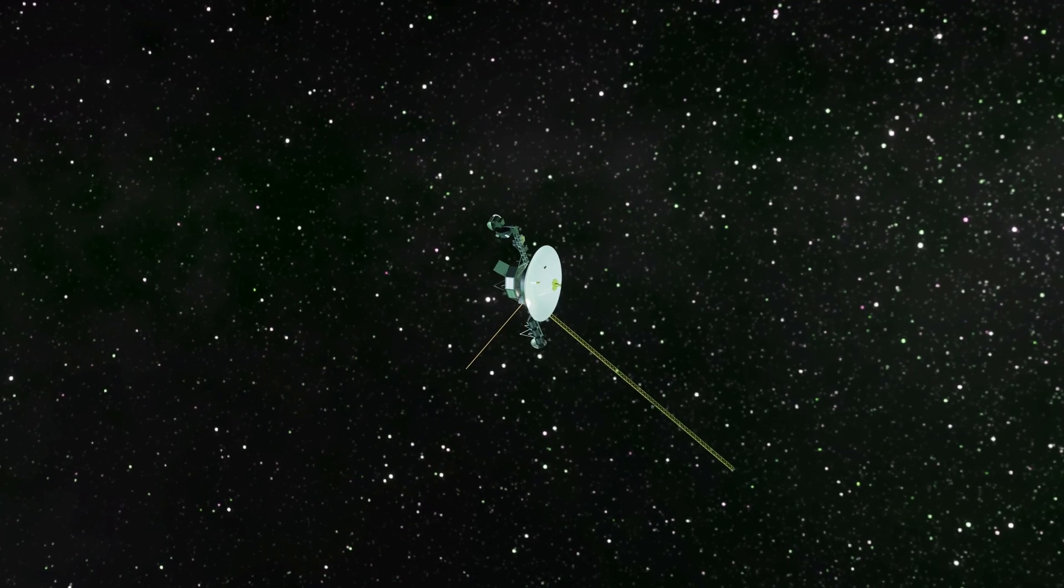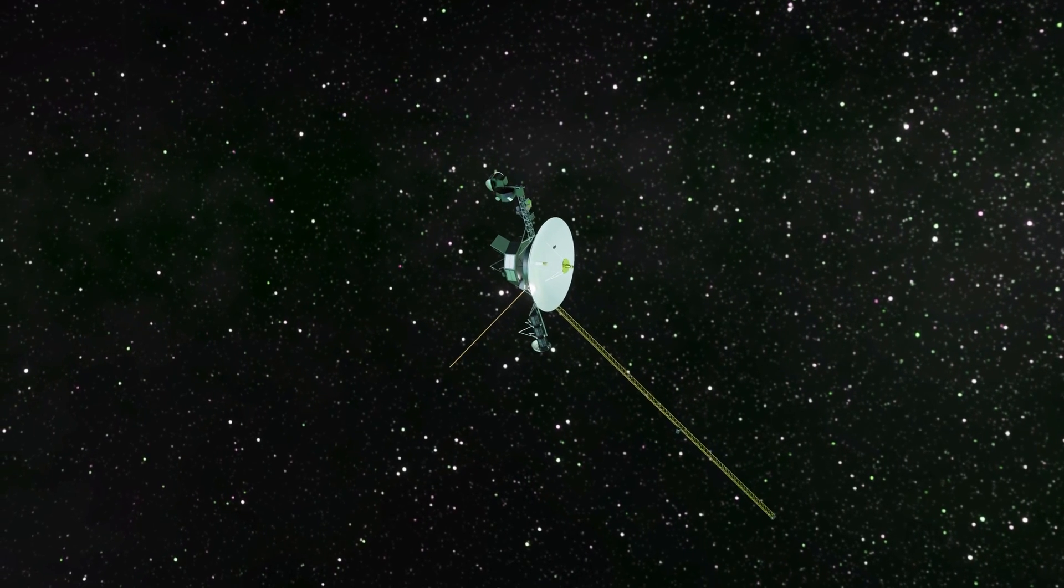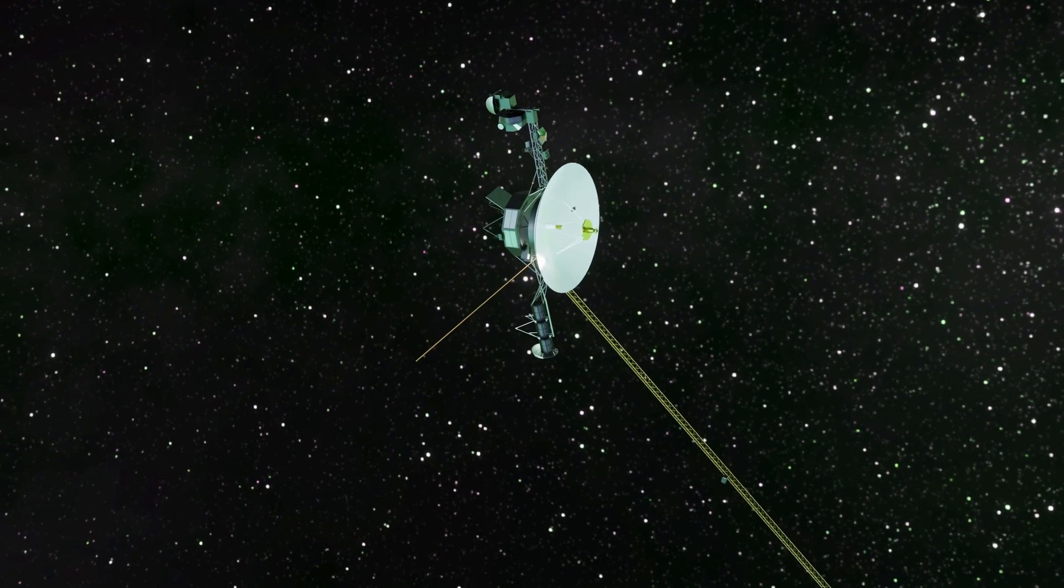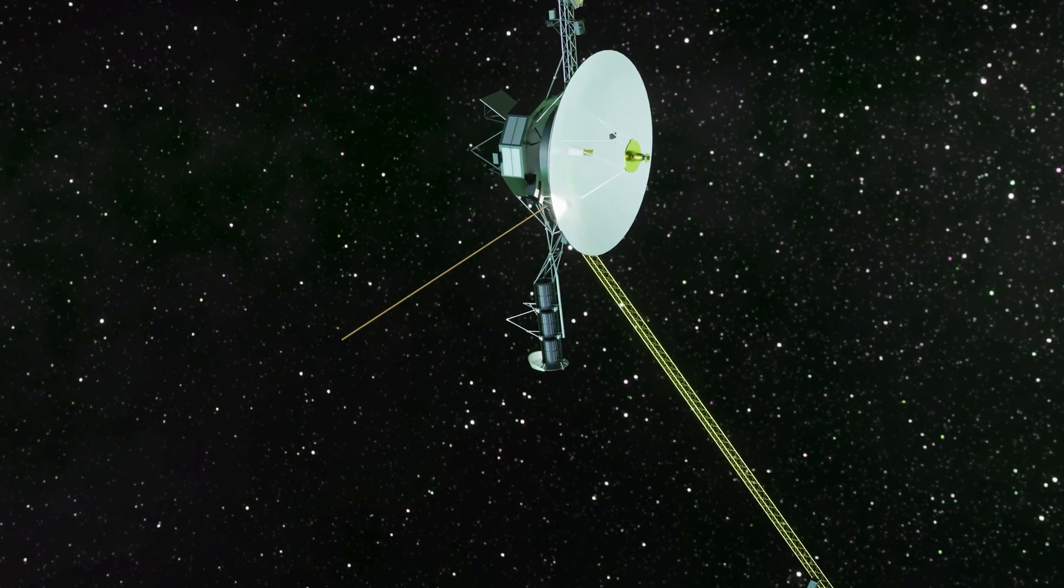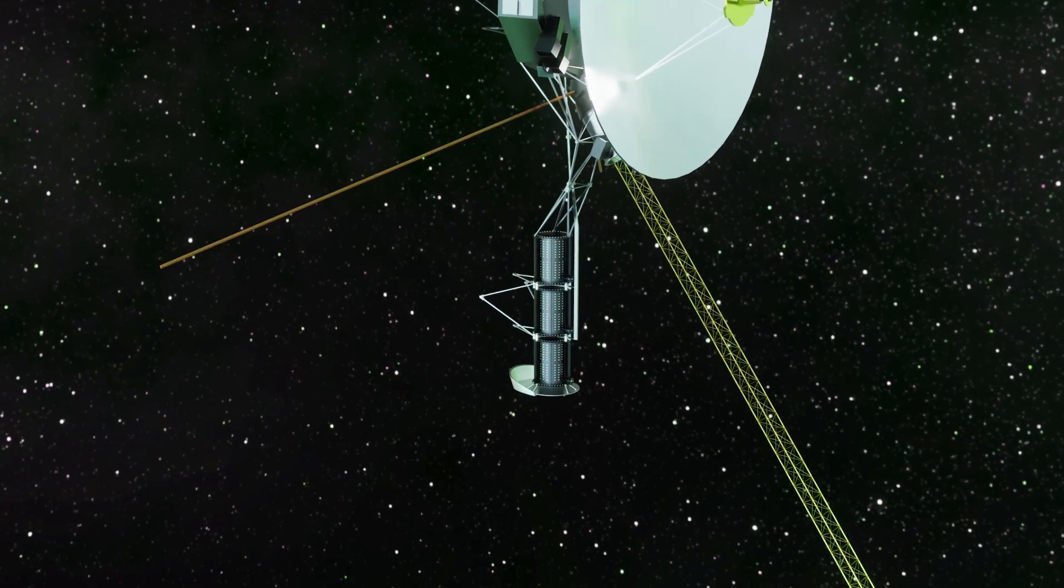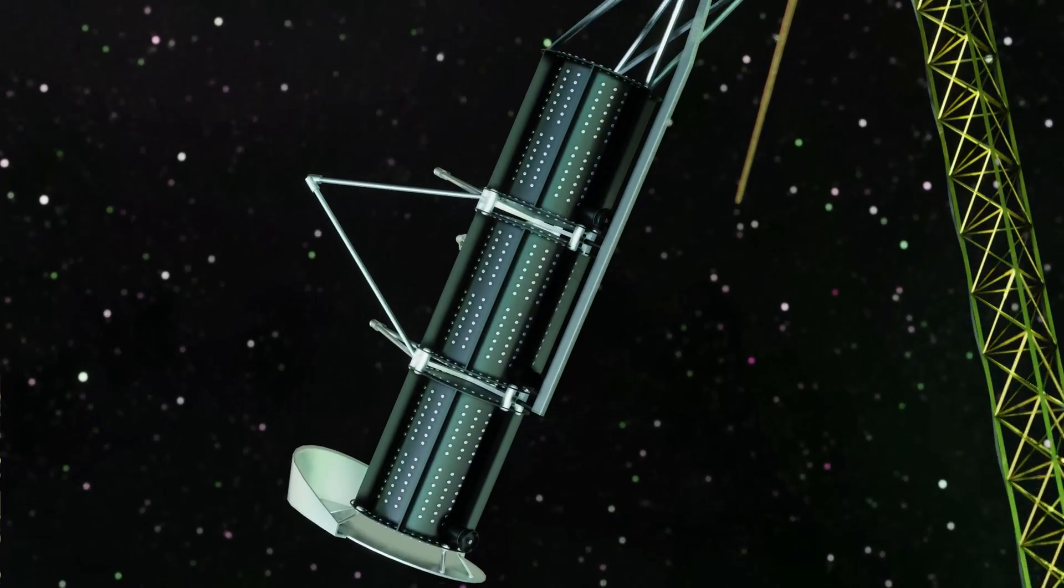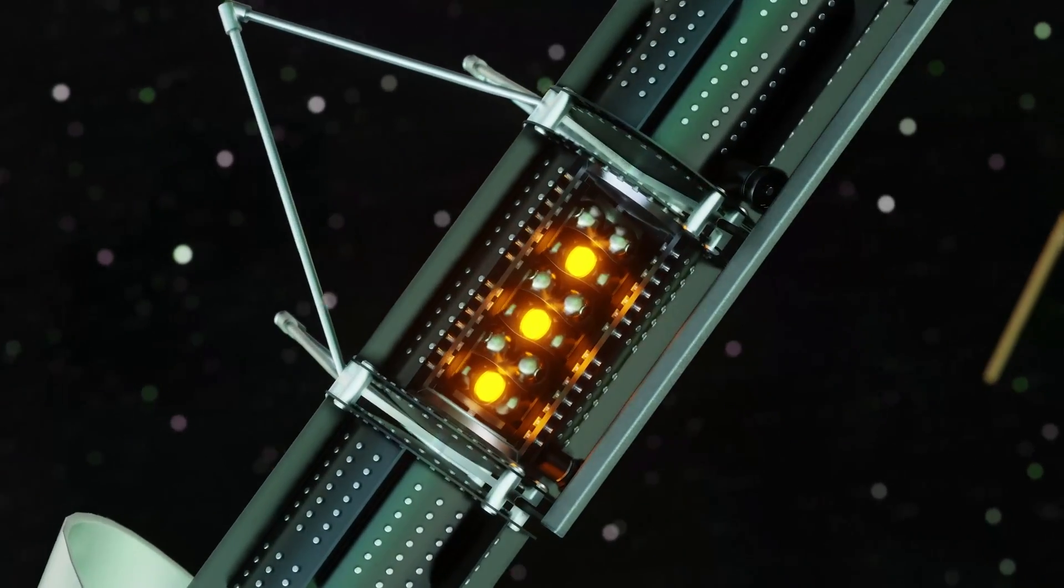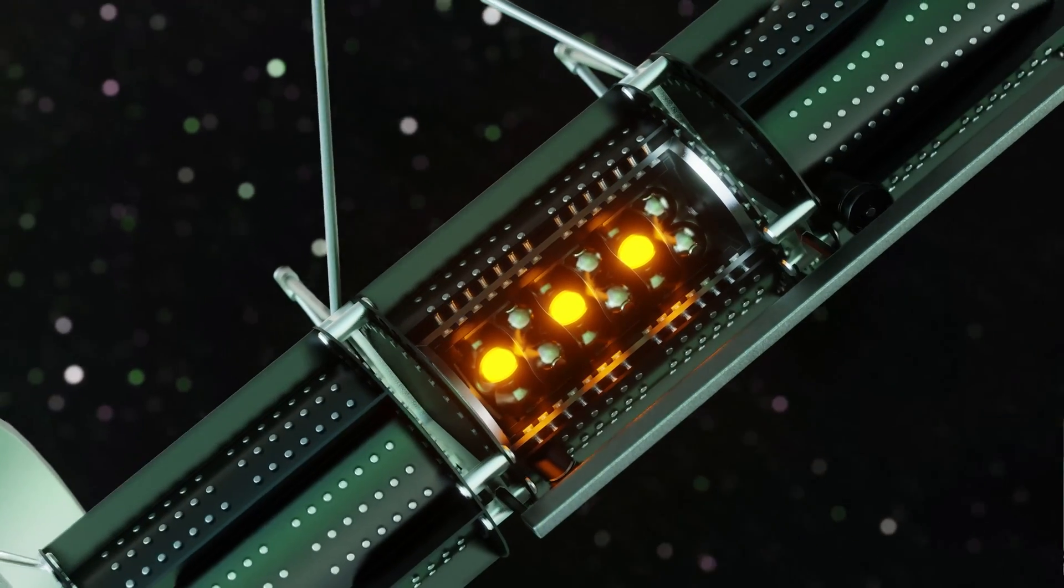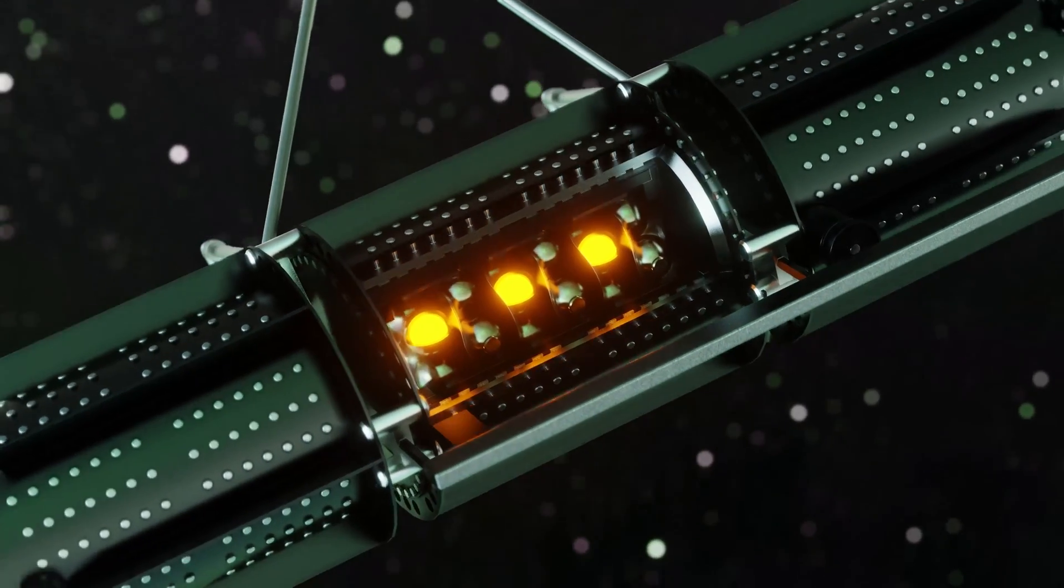But on Voyager 1, which is billions of kilometers away from planet earth, even after more than 40 years, a generator continues to provide the energy necessary for it to operate. What's more, according to NASA itself, to this day, none of these generators, also used on other missions, have ever stopped producing electricity.